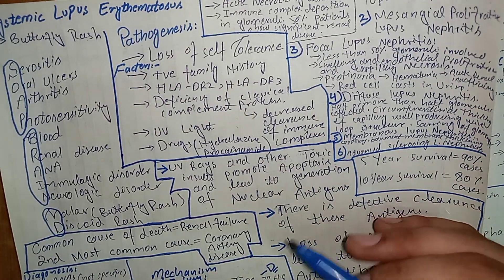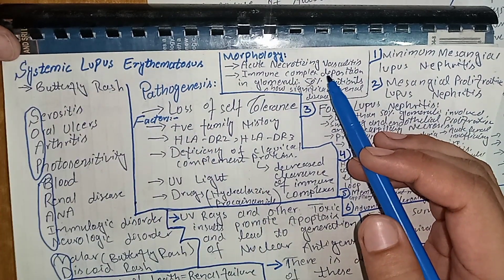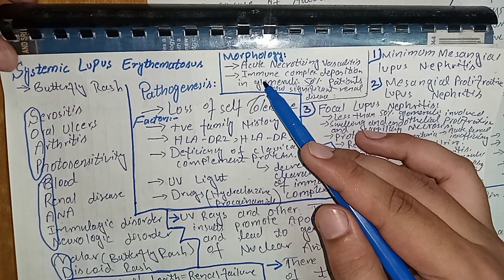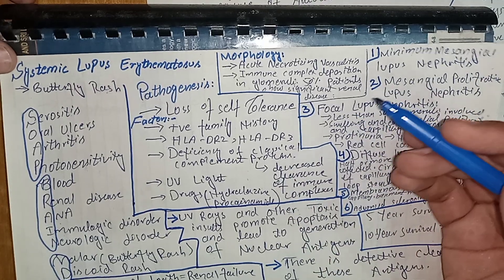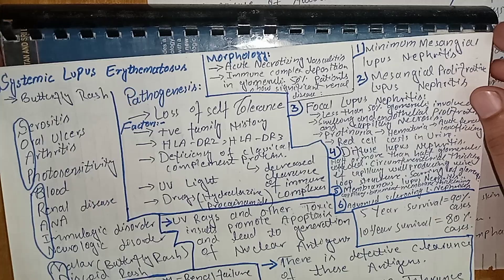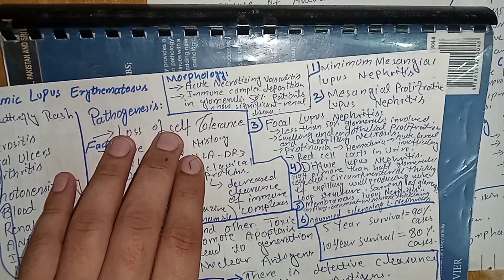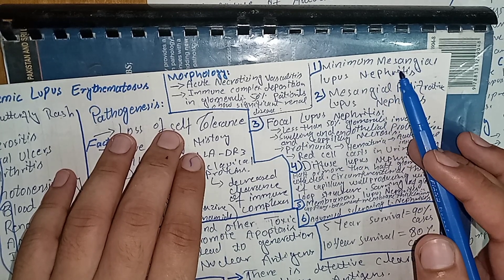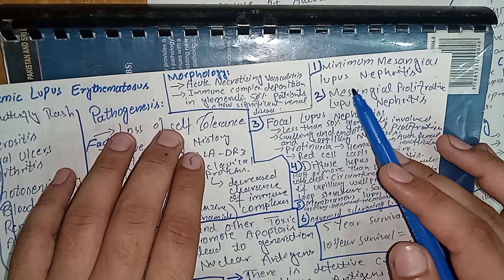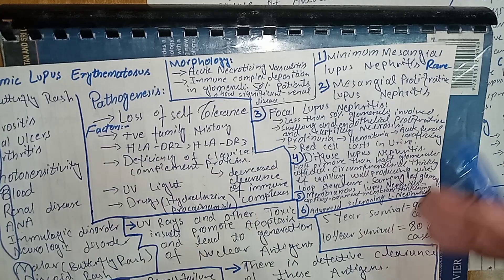Regarding morphology, SLE is characterized by acute necrotizing vasculitis. About 50% of patients show significant renal disease. Renal involvement shows six basic patterns. First is minimal mesangial lupus nephritis, where antigen-antibody complexes deposit in mesangial tissue but there is no proliferation and no involvement of glomerular capillaries — this is the rarest stage. Second is mesangial proliferative lupus nephritis, where mesangial cells proliferate but glomerular capillaries are still not involved.